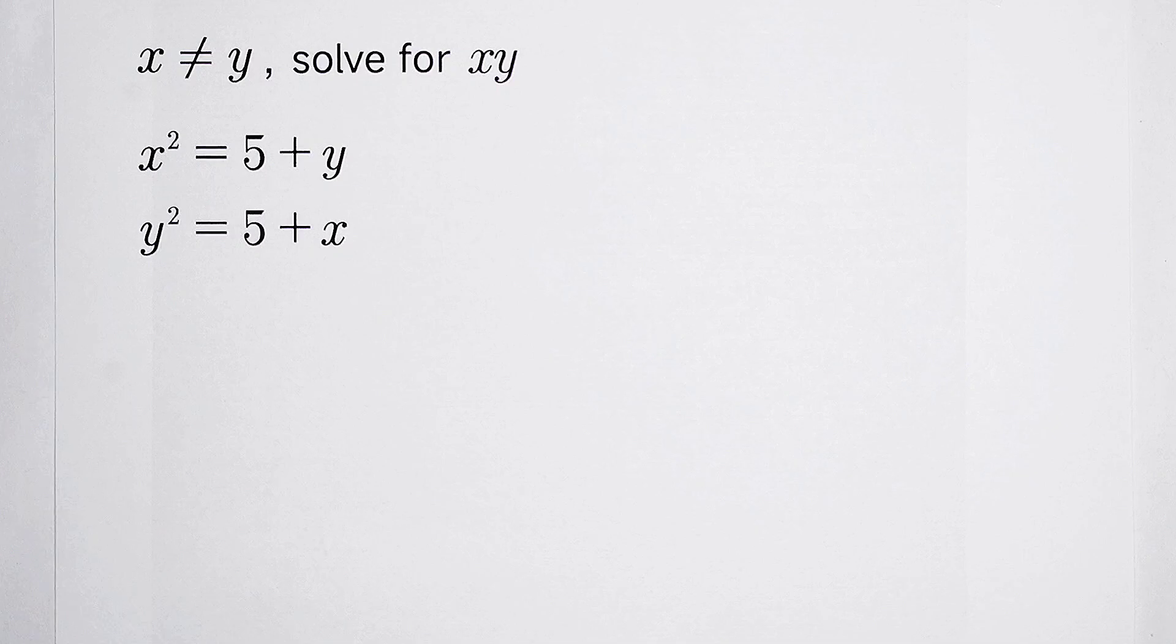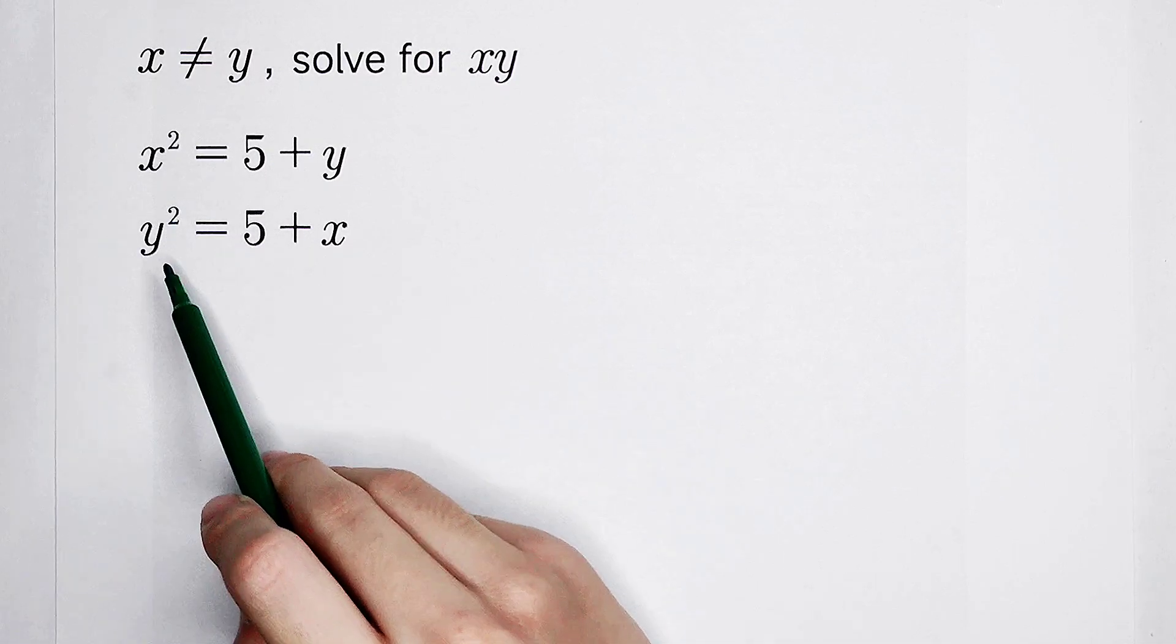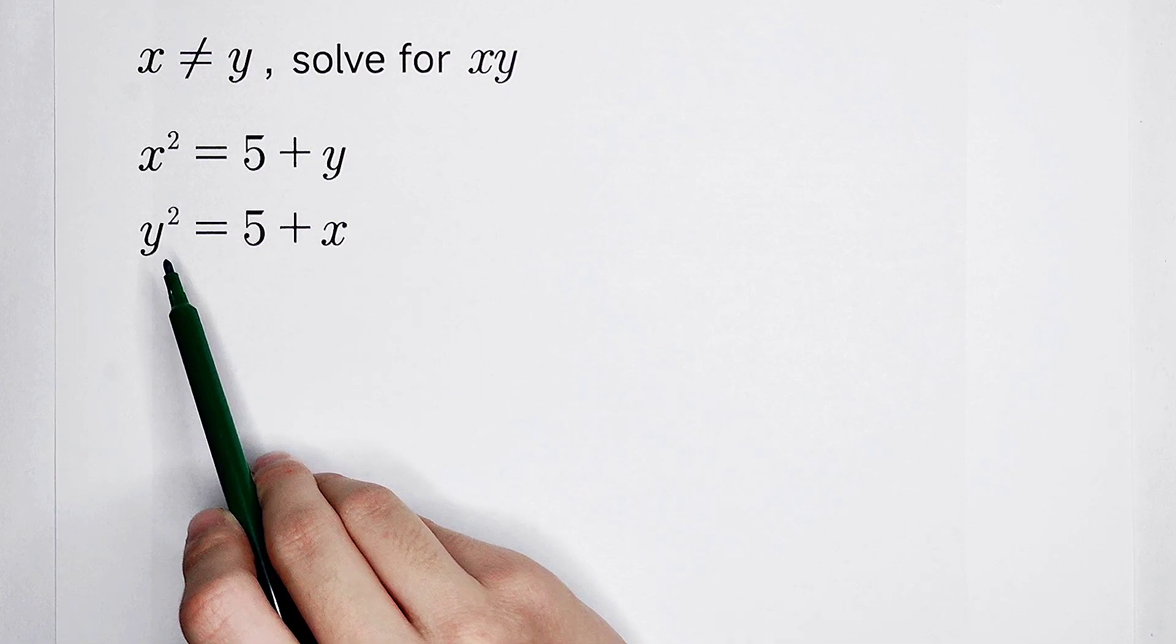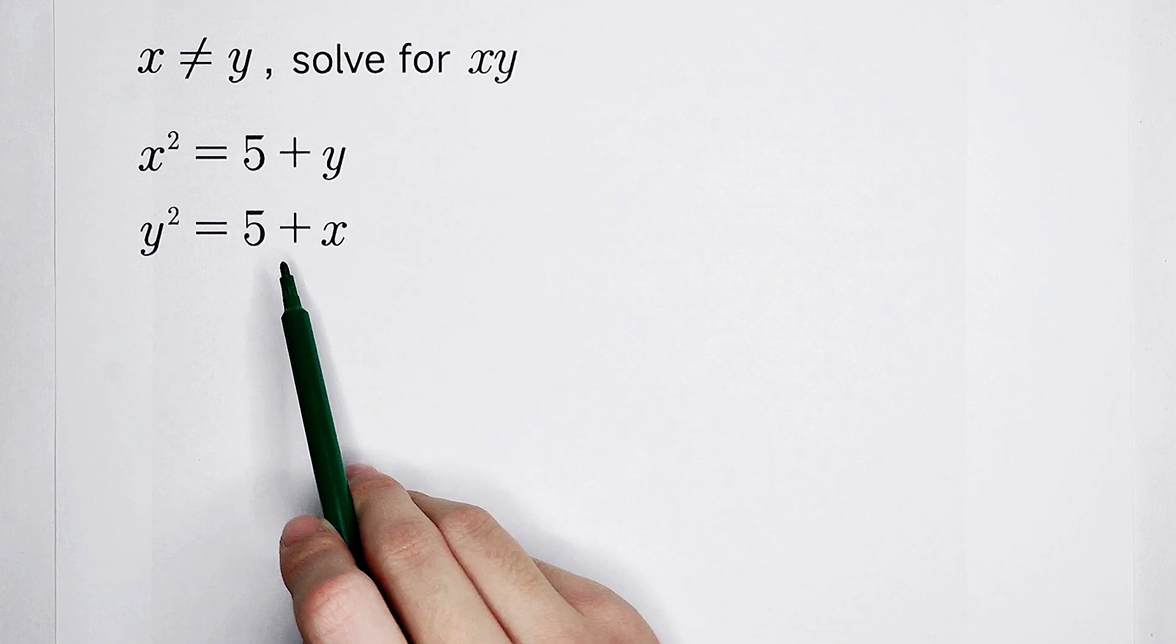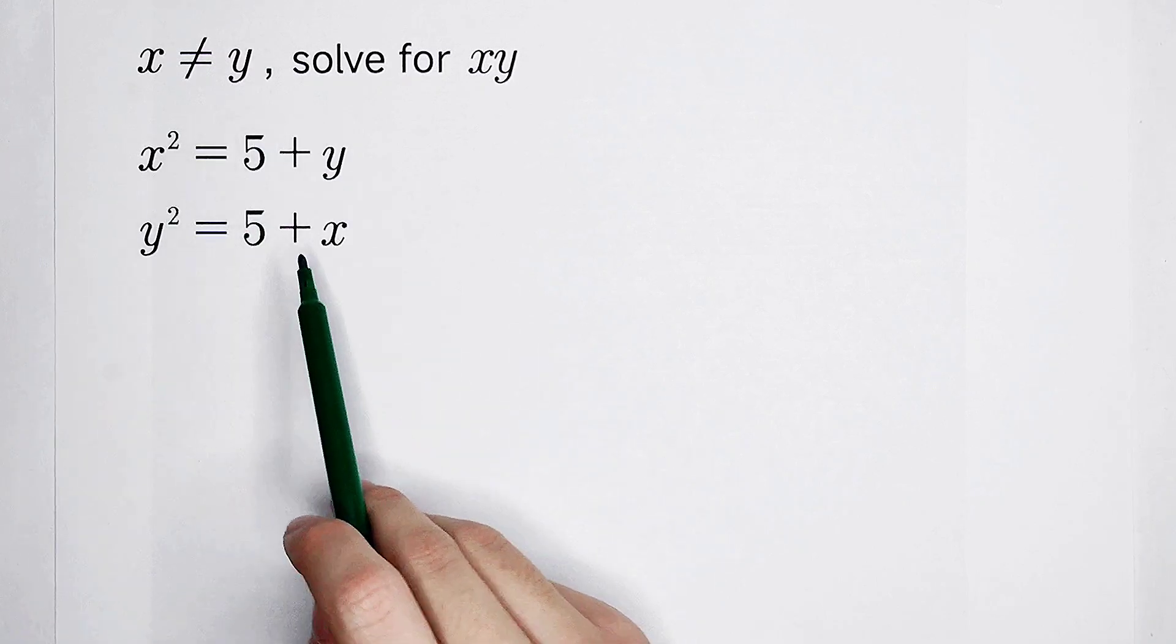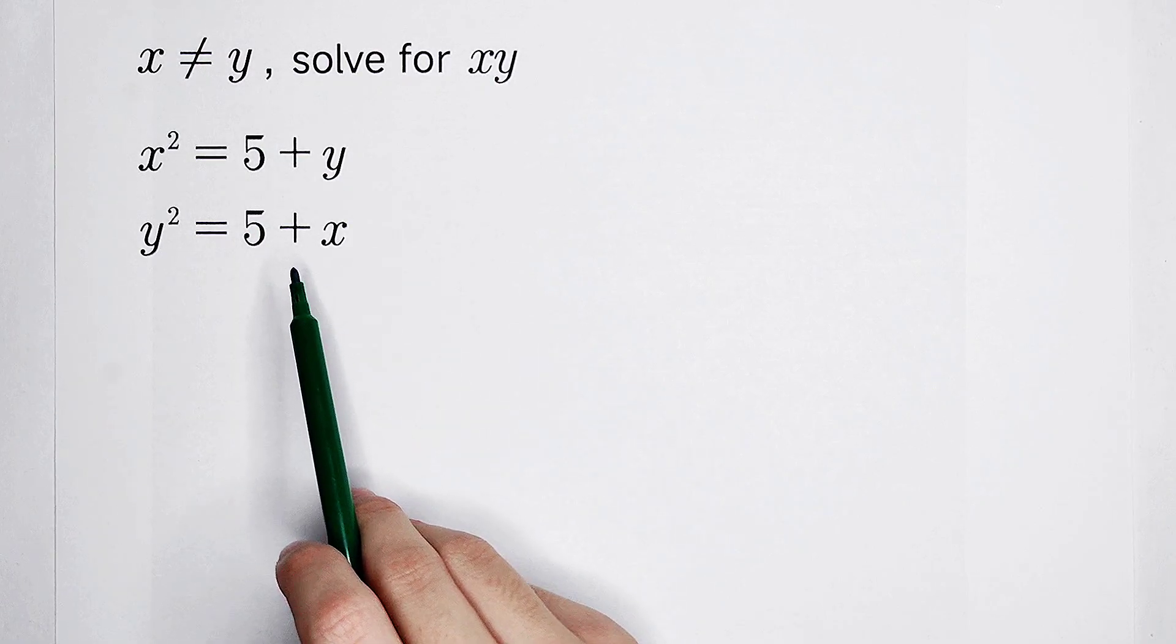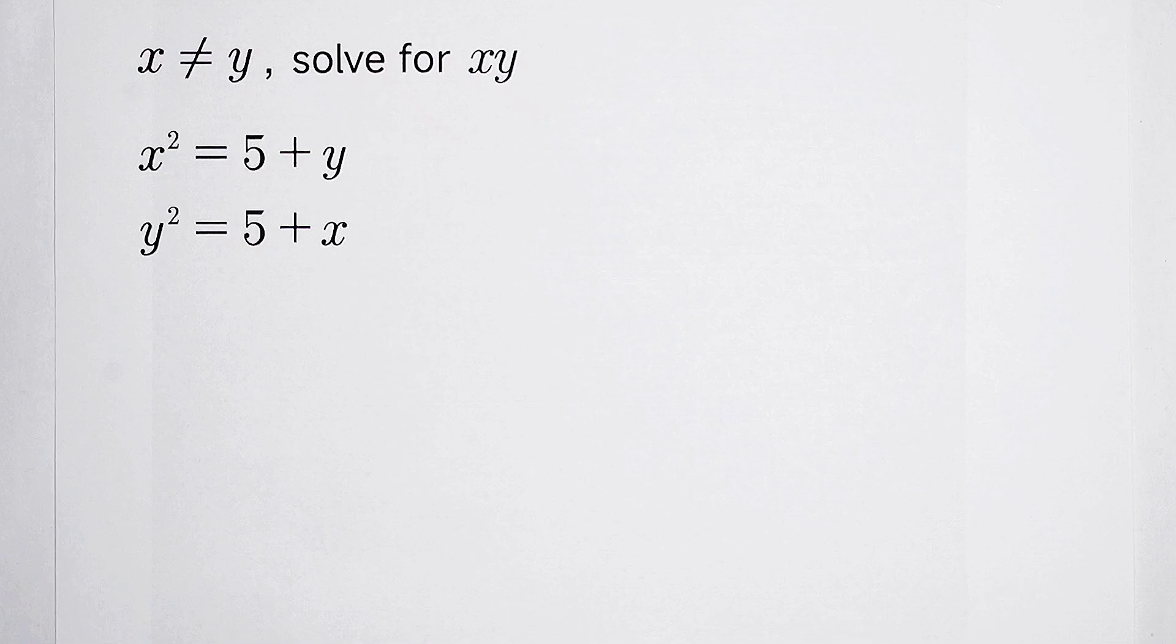First of all, observe x squared, y squared, they are the left side. 5 plus y, 5 plus x, they are the right side. The right side are both linear, and the left side are quadratic terms.